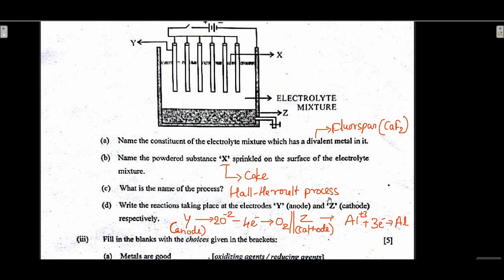The name of the process is the Hall-Héroult process. Write the reactions at the electrodes: Y is the anode, Z is the cathode. At the anode, oxide ions (anions) will come — two oxide ions lose four electrons and form O2 gas, releasing oxygen gas. At the cathode, aluminium ions gain three electrons and form aluminium metal.